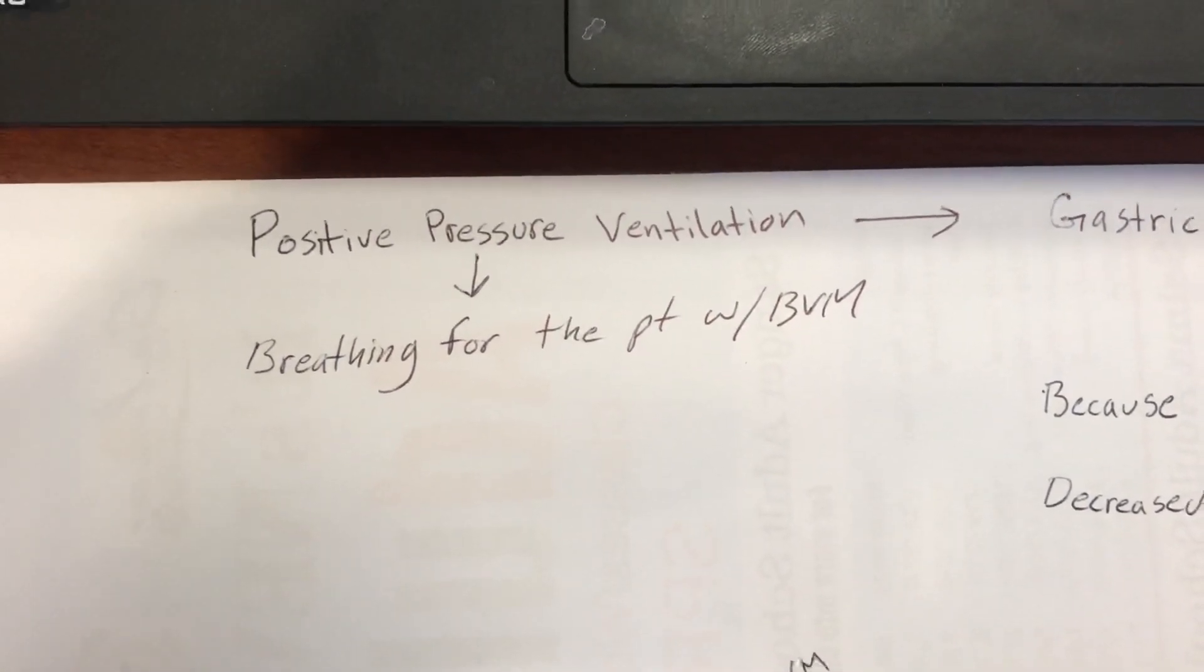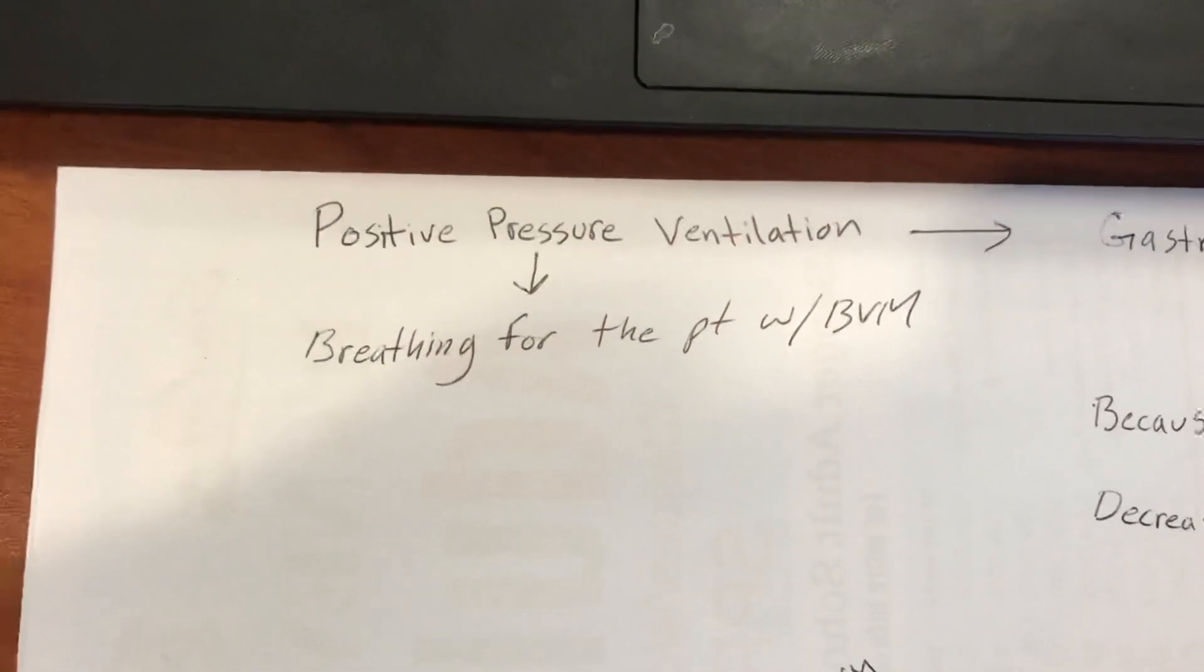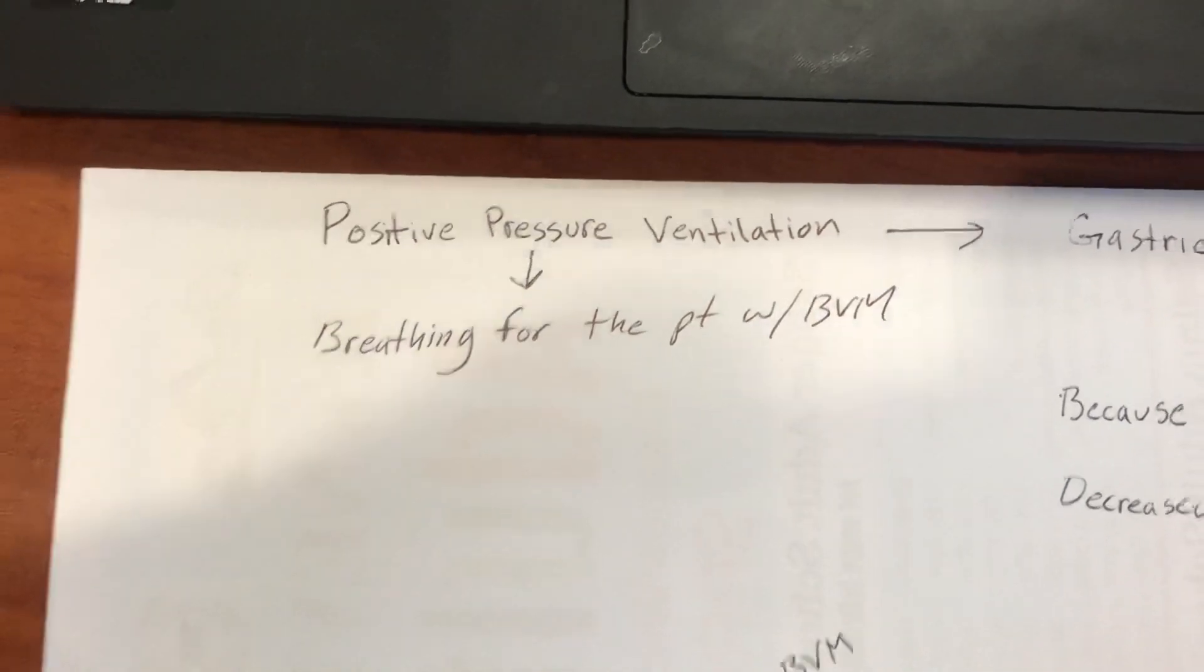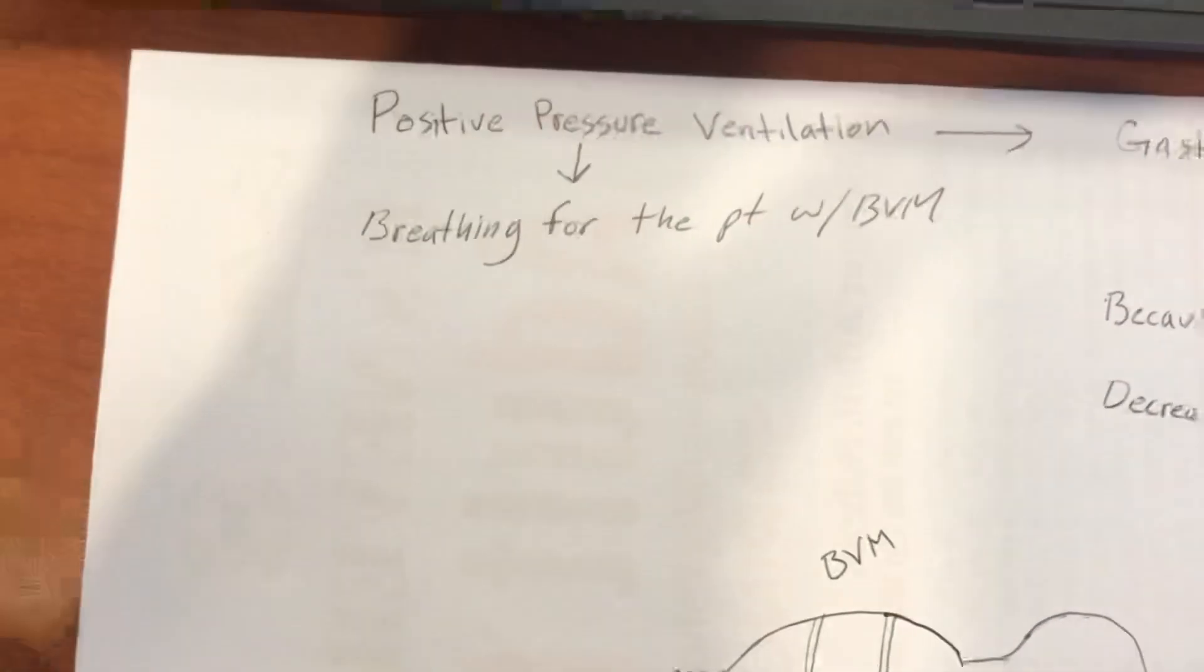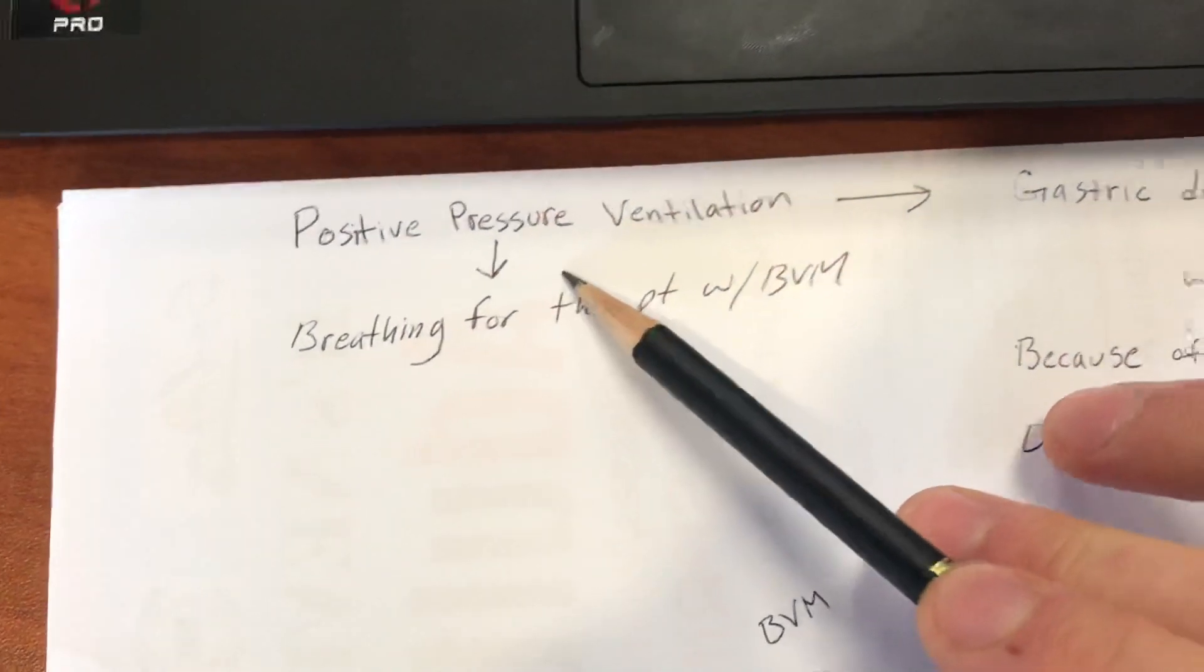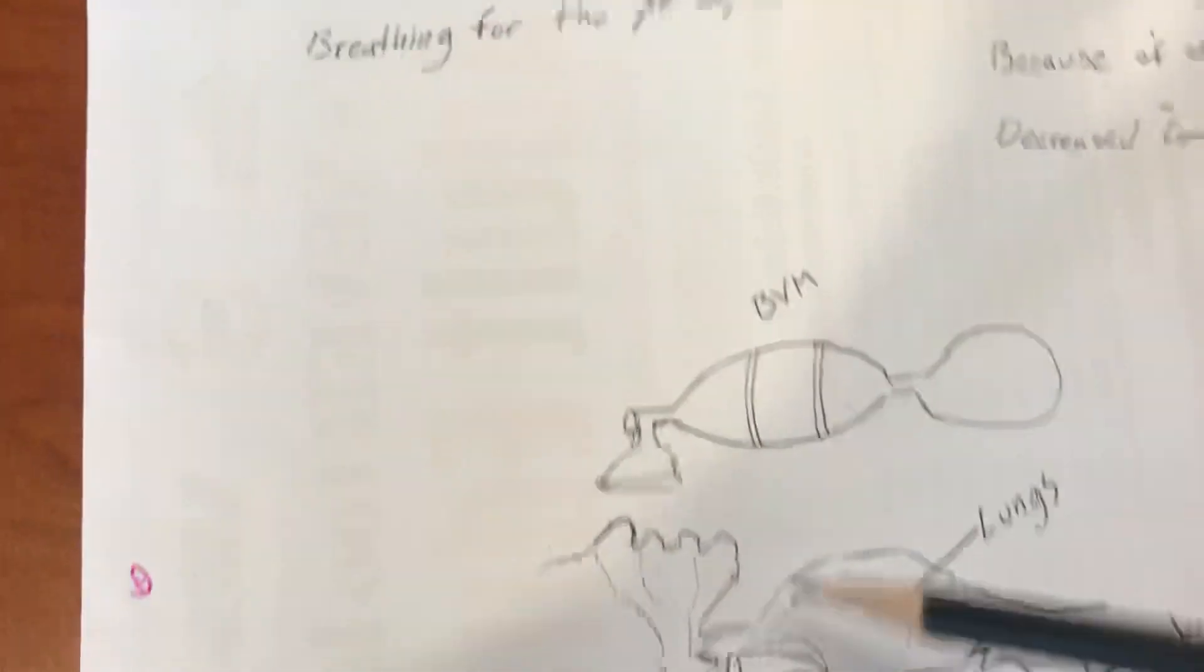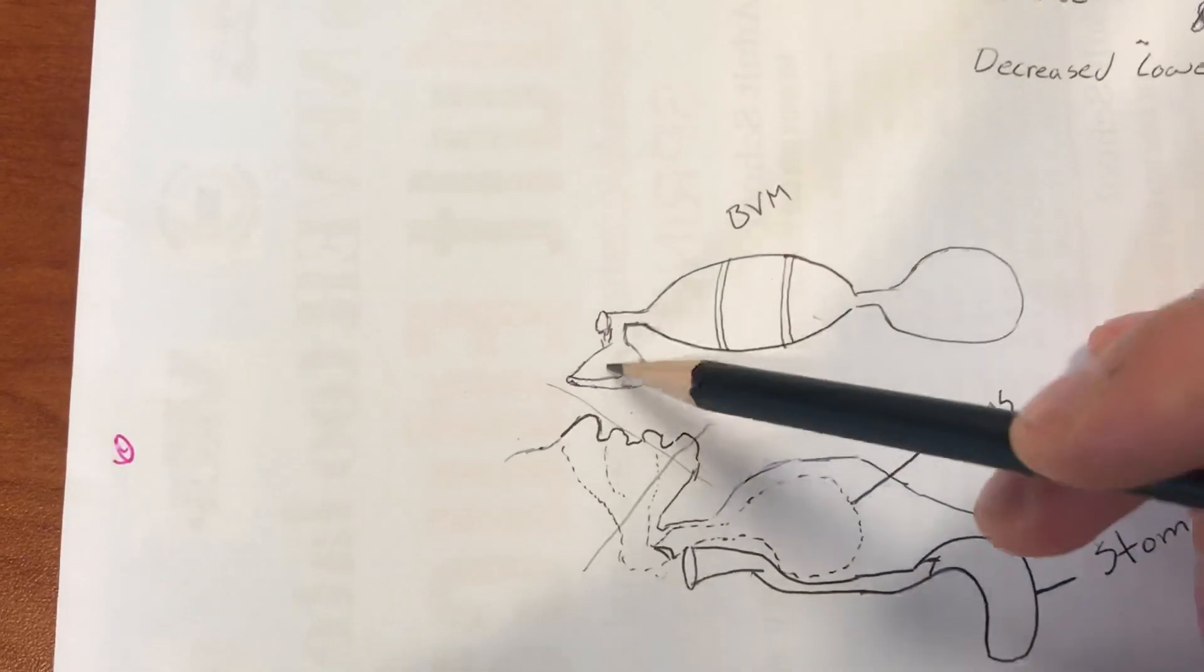In this video, I'm going over positive pressure ventilation and how it can cause gastric distension. First, what is positive pressure ventilation? That is when you are breathing for a patient. So this patient is no longer breathing, so you have to manually pump air into their respiratory system.